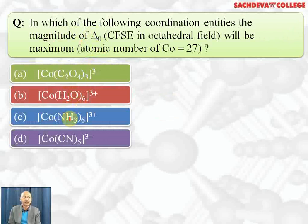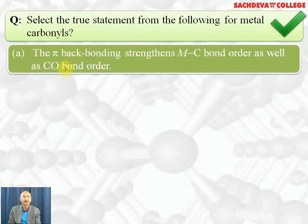The next question asks: among the following coordination entities, for which will the magnitude of octahedral splitting energy be maximum? The correct answer is D, because cyanide ion is a strong field ligand — the greater the field strength of the ligand, the greater the octahedral splitting energy.